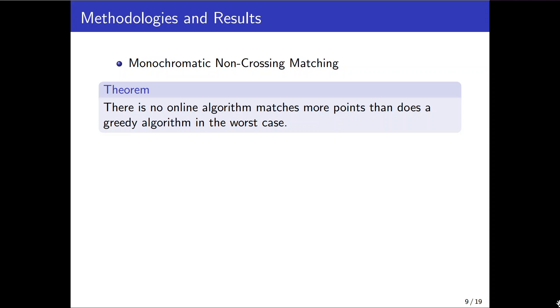In the next step we provided a lower bound for this case and we showed there is no deterministic online algorithm can match points more than the greedy does. To do so we consider the adversarial input and defined critical regions as a red area in this picture.